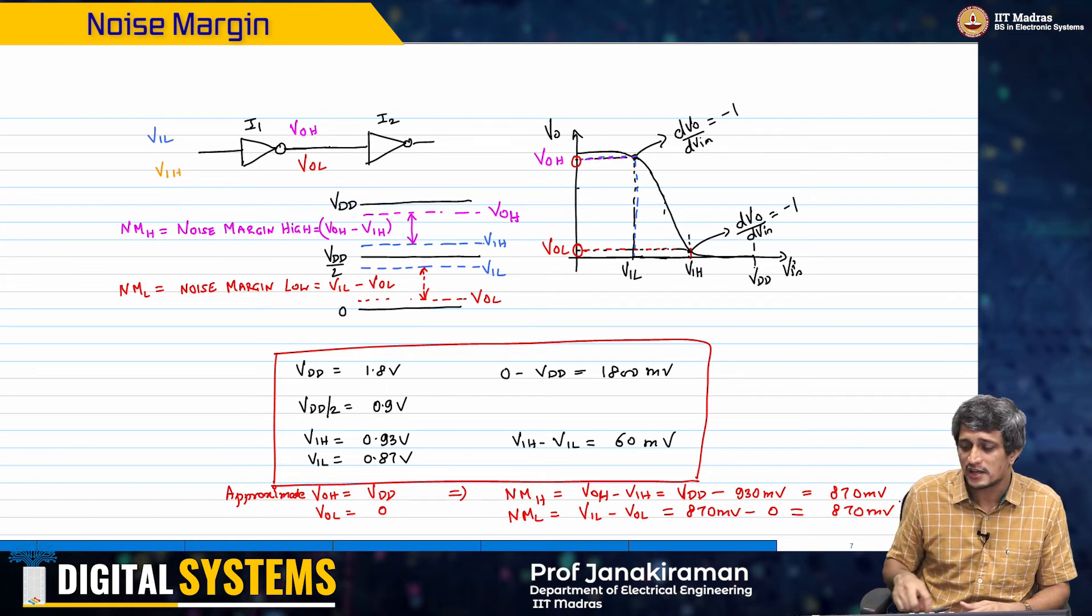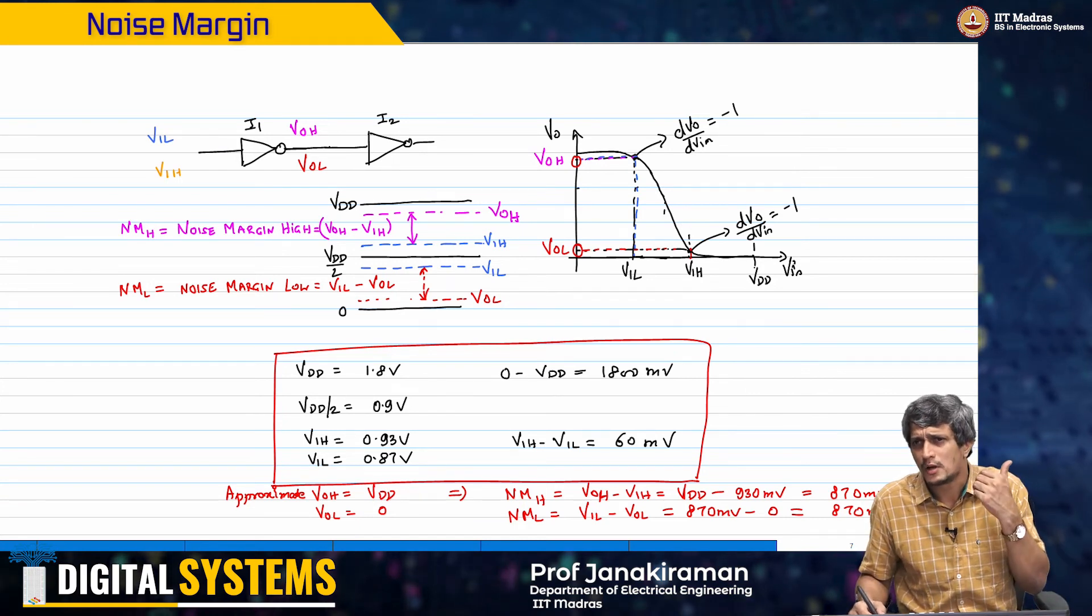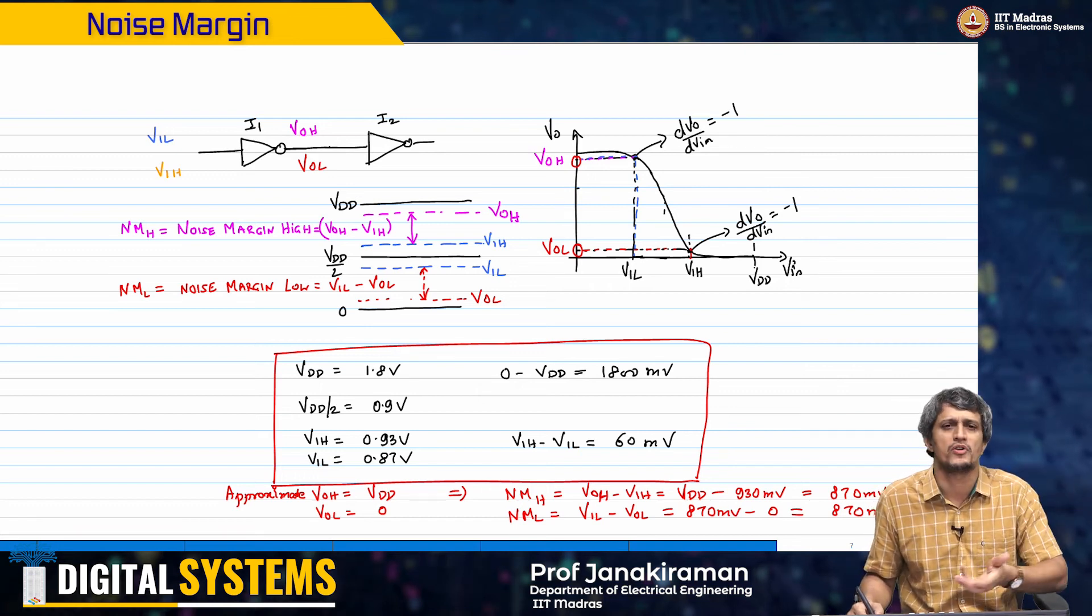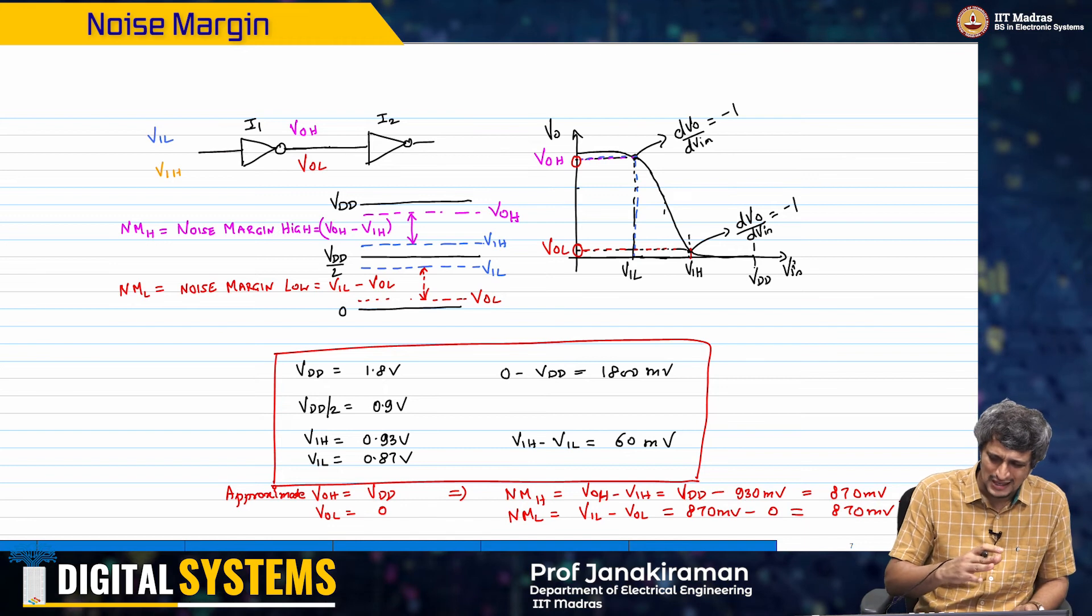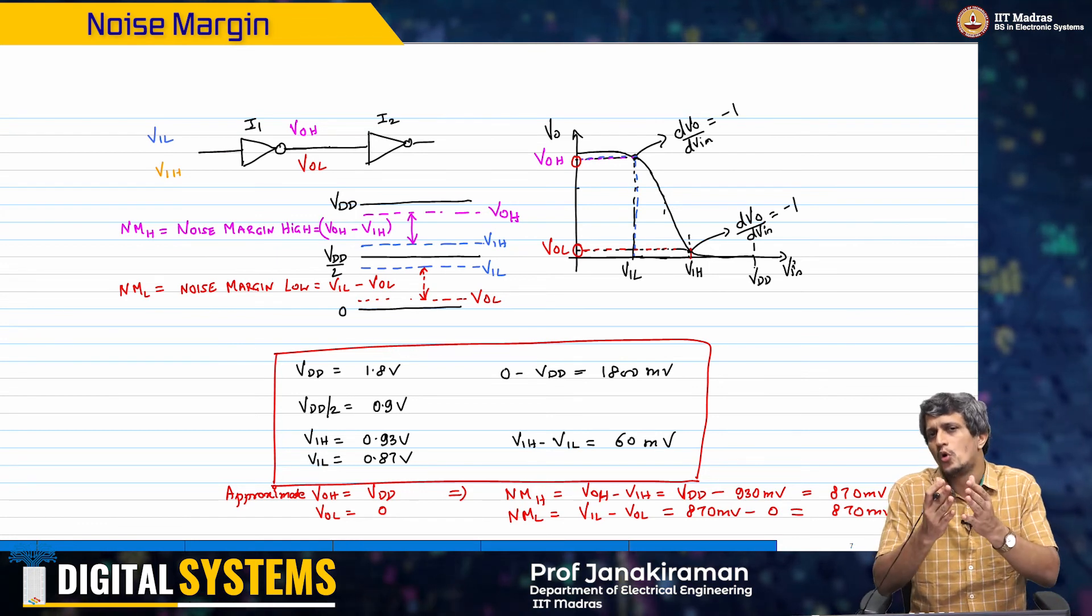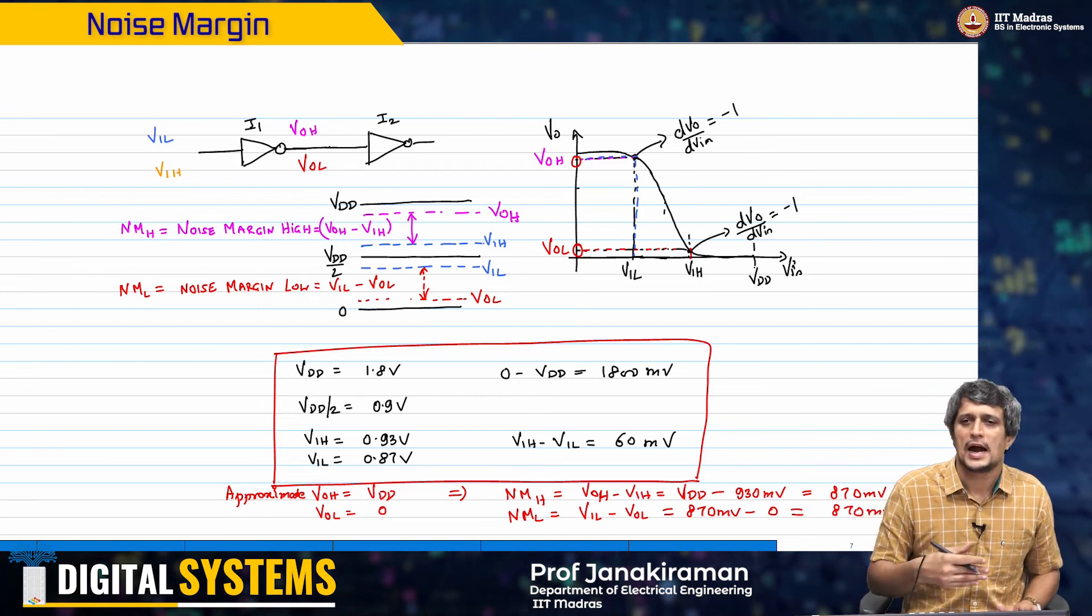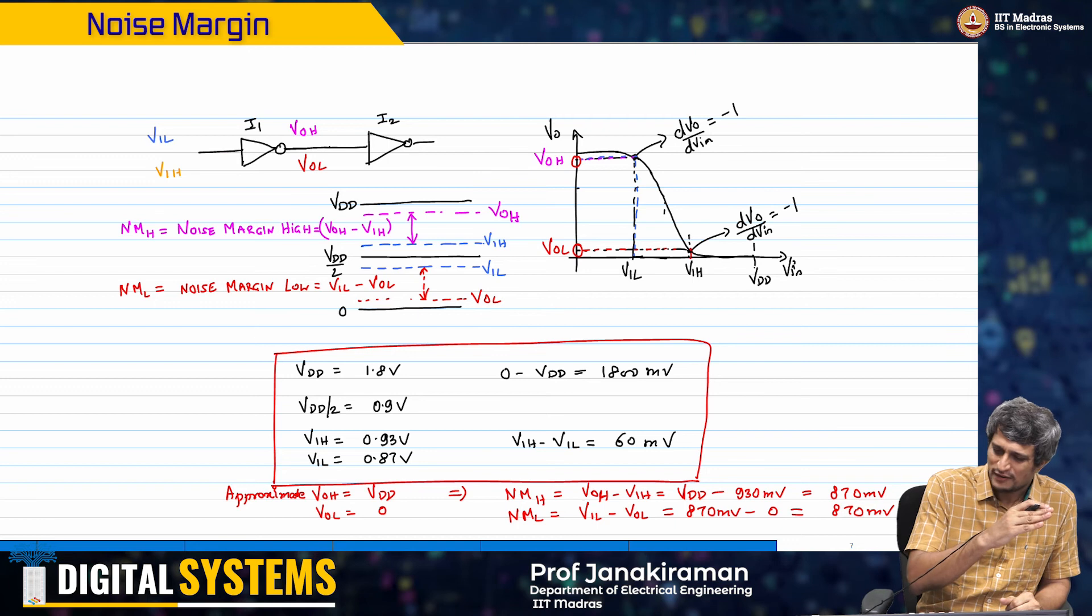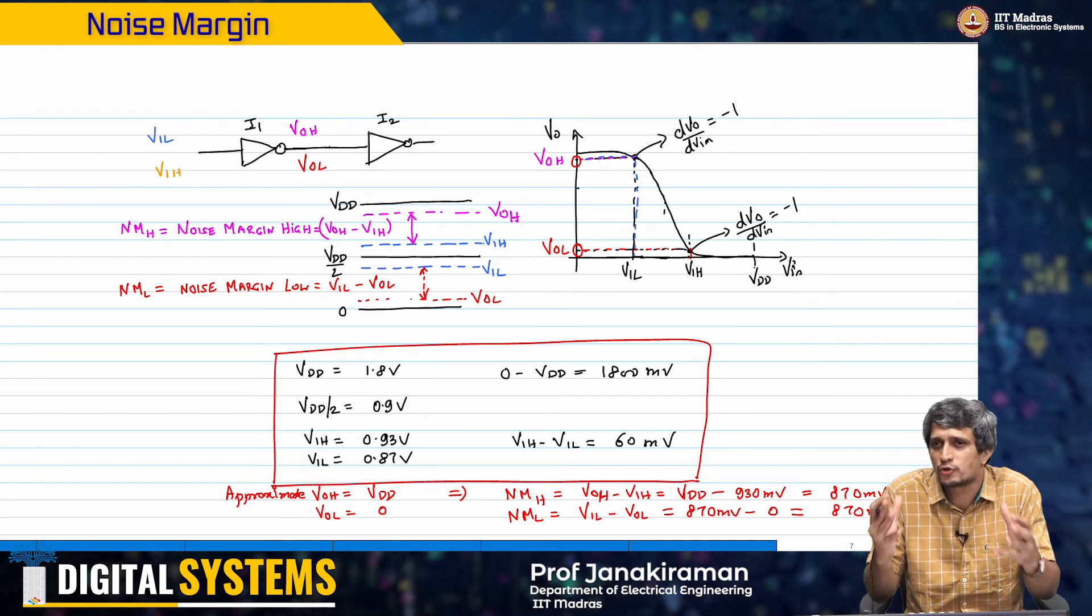That is the reason digital circuits are absolutely so popular. Microprocessors have just become omnipresent - they are everywhere. Your mobiles, your desktops, your laptops, servers, simply because of this one reason of robustness. Given various kinds of voltage transfer characteristics, you should be able to identify and analyze where the noise margin should be, where the VIH and VIL should be. The assignments will also reinforce many of these concepts.